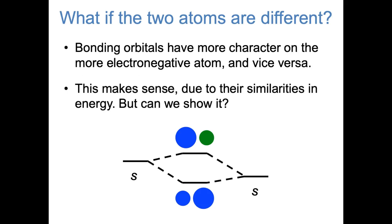The thing to remember is that a bonding orbital has more weight on the more electronegative atom, and an antibonding orbital has more weight on the less electronegative atom. This kind of makes sense. The bonding orbital is lower in energy, so it more closely resembles the atomic orbital that's lower in energy — the one on the more electronegative atom. And the antibonding orbital is higher in energy, so it more closely resembles the atomic orbital that's higher in energy — the one on the less electronegative atom. Even though this makes intuitive sense, it would be nice if we could show it mathematically, starting with the Schrödinger equation, and that's what we're going to do now.